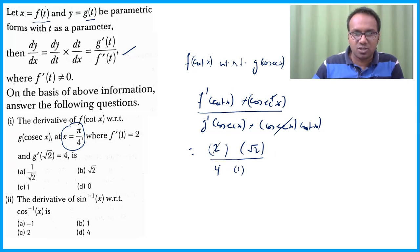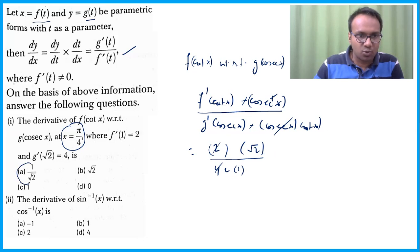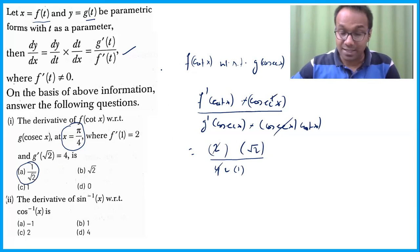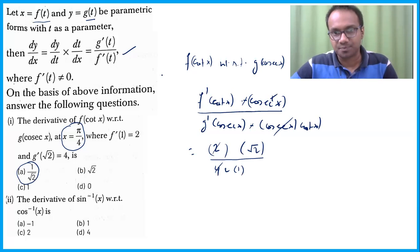At x = π/4: cot(π/4) = 1, cosec(π/4) = √2. Substituting: f'(1) · cosec(π/4) / (g'(√2) · cot(π/4)) = 2 · √2 / (4 · 1) = 2√2/4 = √2/2. So the answer is √2/2, which is option A.